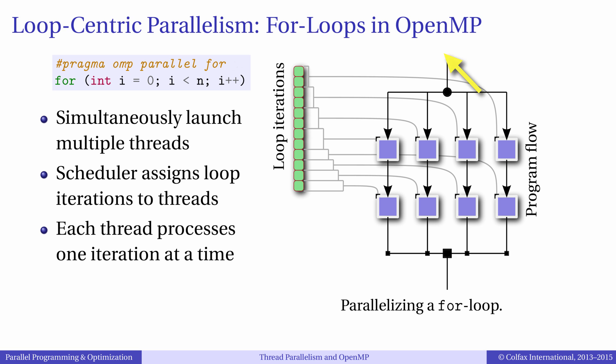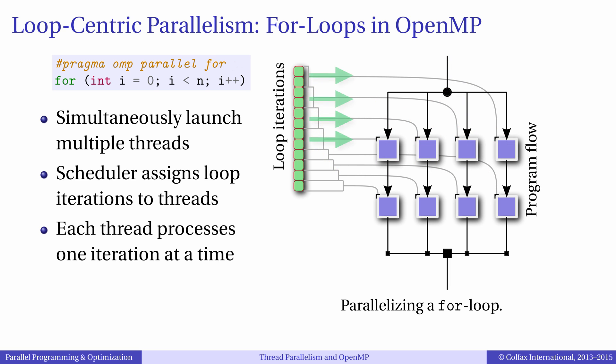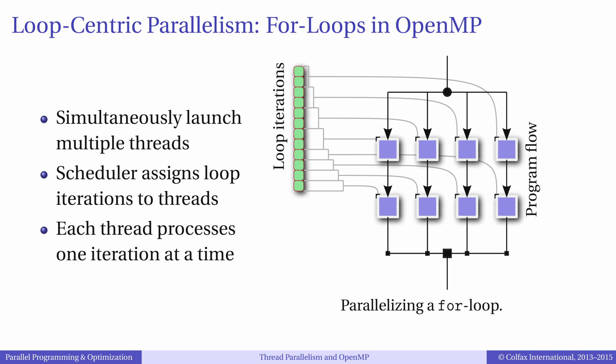The framework takes care of creating threads and distributing the loop iterations between them. Parallel processing may accelerate calculations by a factor that can, in the best case scenario, be equal to the number of OpenMP threads.